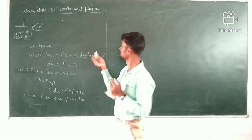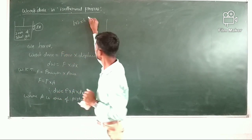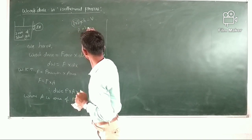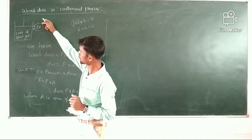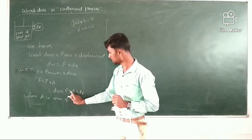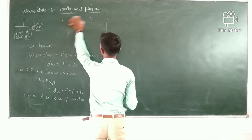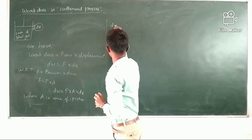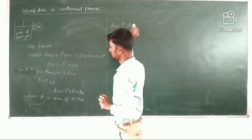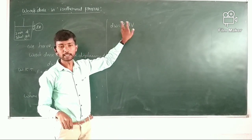Area into distance equals volume, because length into breadth into height equals volume. So, dx is equal to height, and area A into dx equals dV, the increase in volume. Here dV is the increasing volume.